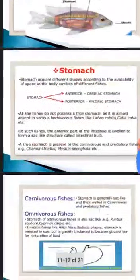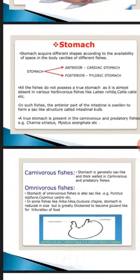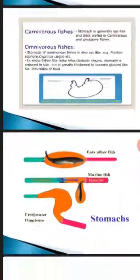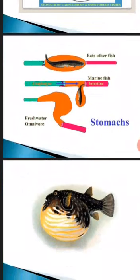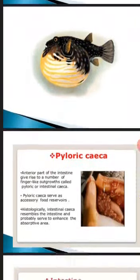In carnivorous and predatory fishes the stomach is generally sac-like and thick-walled. In omnivorous fishes such as Puntius and Cyprinus carpio, and in some fishes like Hilsa alisha, the stomach is reduced in size but greatly thickened to form a gizzard-like structure for digestion of food. In the puffer fish, the stomach expands dramatically — when the fish is scared the stomach extends outward, eventually enclosing the whole body, as you can see in the diagram.